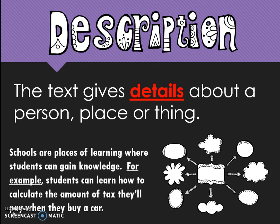Here's our example. Schools are places of learning where students can gain knowledge. For example, students can learn how to calculate the amount of tax they'll pay when they buy a car. Using our web, we would put schools, or places of learning where students can gain knowledge, in the center. One of the details is that students can learn how to calculate the amount of tax they'll pay when they buy a car. Obviously, there are several more details of things that students can learn while they are at school.